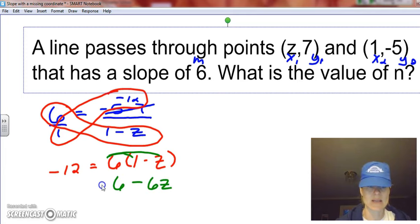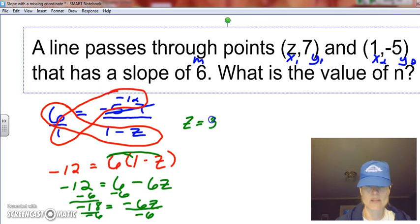And then we can solve for z. It's our two-step equation, so we want to subtract the 6, and I get -18 equals -6z. And then just divide through by the -6, and then we have z equals positive 3. And again, we can plug that in and make sure I get a slope of 6. We have -5 minus 7, which was -12, and then with this being 3, I get 1 minus 3, which is -2. And then that would give me a positive 6, so I know I did that right.